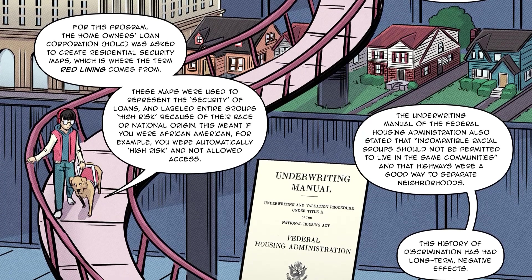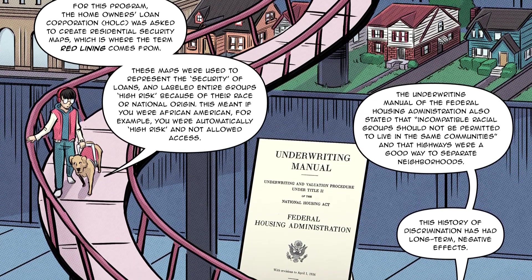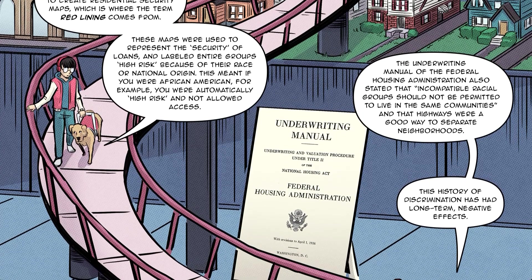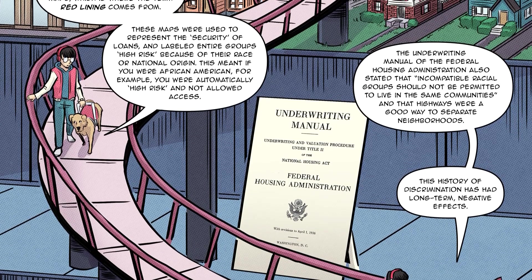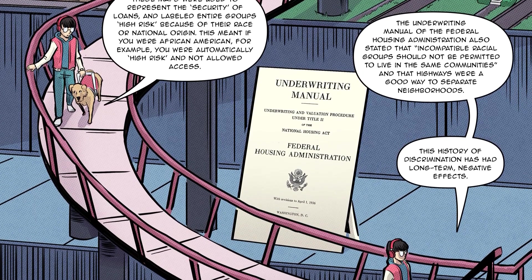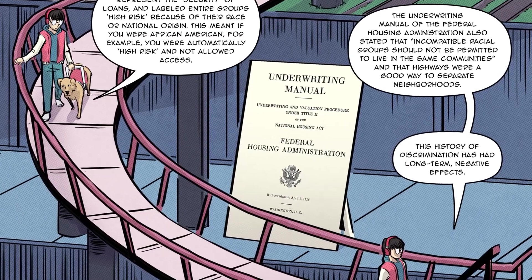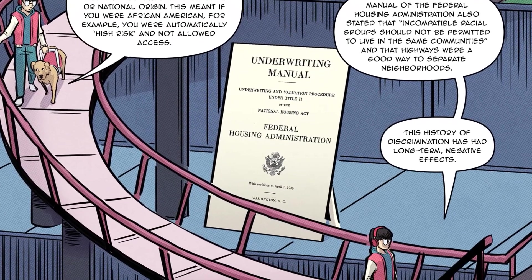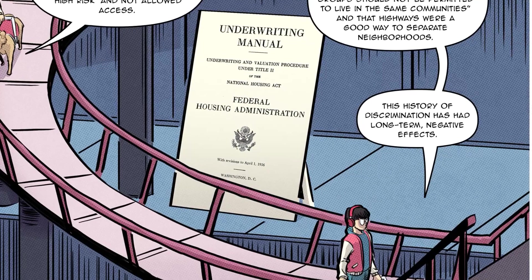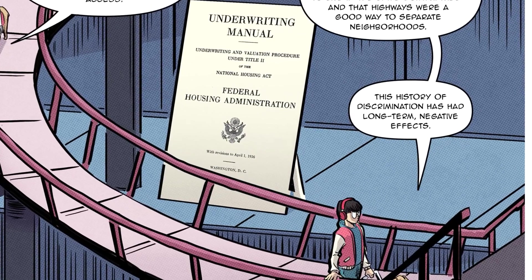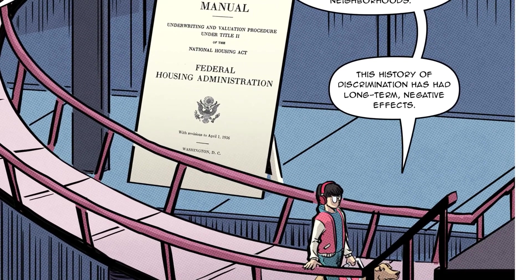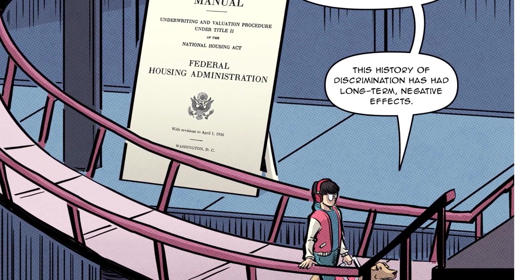This meant if you were African American, for example, you were automatically high risk and not allowed access. The underwriting manual of the Federal Housing Administration also stated that incompatible racial groups should not be permitted to live in the same communities and that highways were a good way to separate neighborhoods. This history of discrimination has had long-term negative effects.